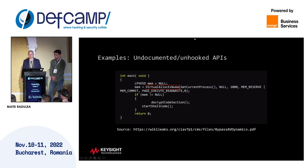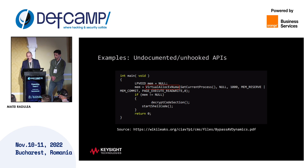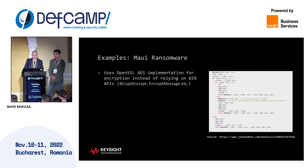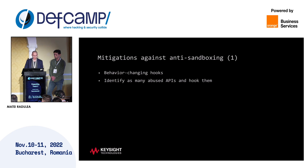In this example, we have an unhooked API called VirtualAlloc, which is a function that configures memory management in multiprocessing systems. This code will work on a regular PC but will fail on the AV emulator. In the other example, we have MAUI ransomware that uses an OpenSSL implementation for encryption and doesn't use Windows APIs like CryptEncrypt or CryptMessage.